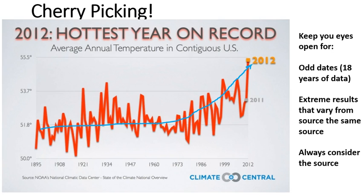I'm going to come up with four different conclusions based on this graph. First: the world's coming to an end — it's an exponential curve, going higher and higher at a crazy out-of-control rate. Second: the temperature is dropping — if I only look at the spike in 1999, I could say the temperature is actually dropping. If I just picked that small part from 99 to 2011, I could say temperature is actually decreasing.